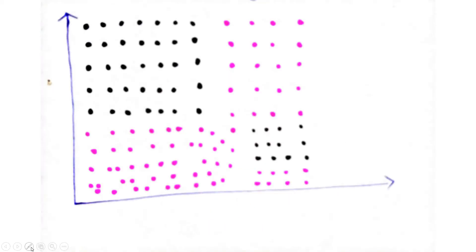Now let me discuss how you can apply a decision tree. Suppose you have one dataset — here we have a 2D dataset where this axis is V2 (variable 2) and this is V1 (variable 1). There are two classes in our dataset drawn using two separate colors: black color is category 1 and purple color is category 2.